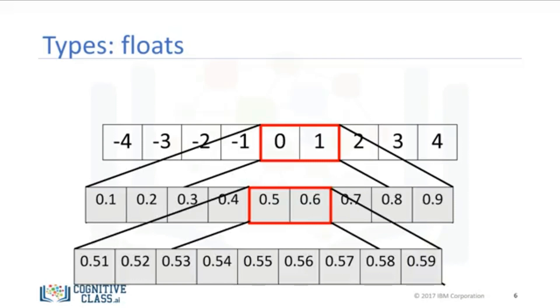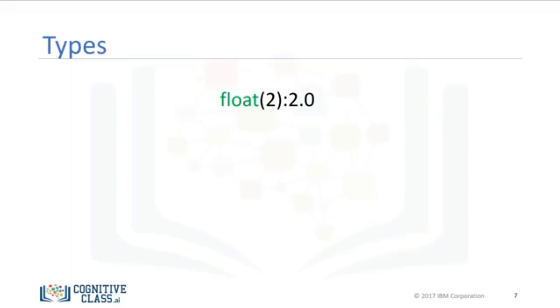We can select numbers in between them. These are floats as well. We can continue the process, zooming in for different numbers. Of course, there is a limit, but it is quite small. You can change the type of the expression in Python. This is called typecasting. You can convert an int to a float. For example, you can convert or cast the integer 2 to a float 2. Nothing really changes. If you cast a float to an integer, you must be careful. For example, if you cast the float 1.1 to 1, you will lose some information.